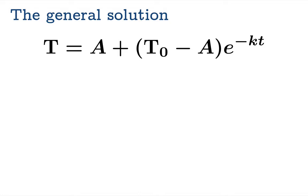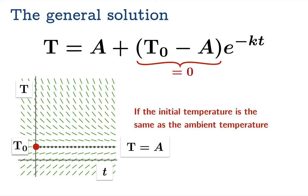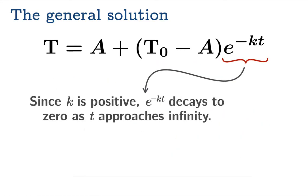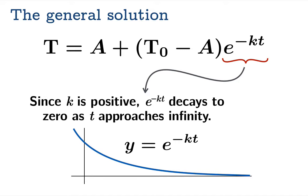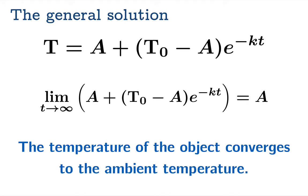Let's examine some things. If the initial temperature is the same as the ambient temperature, then this term is zero and you get the constant solution T equals A. We'll notice that since k is positive, e to the negative kt decays to zero as t approaches infinity. The implication then is that if we look at the limiting value of our temperature function, this term decays to zero and we're simply left with the ambient temperature. So the temperature of the object converges to the ambient temperature.